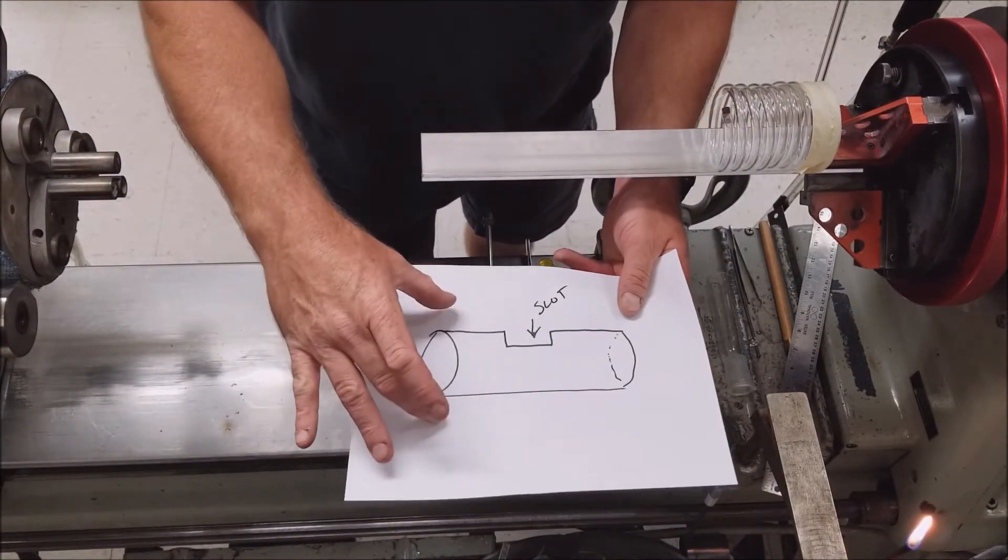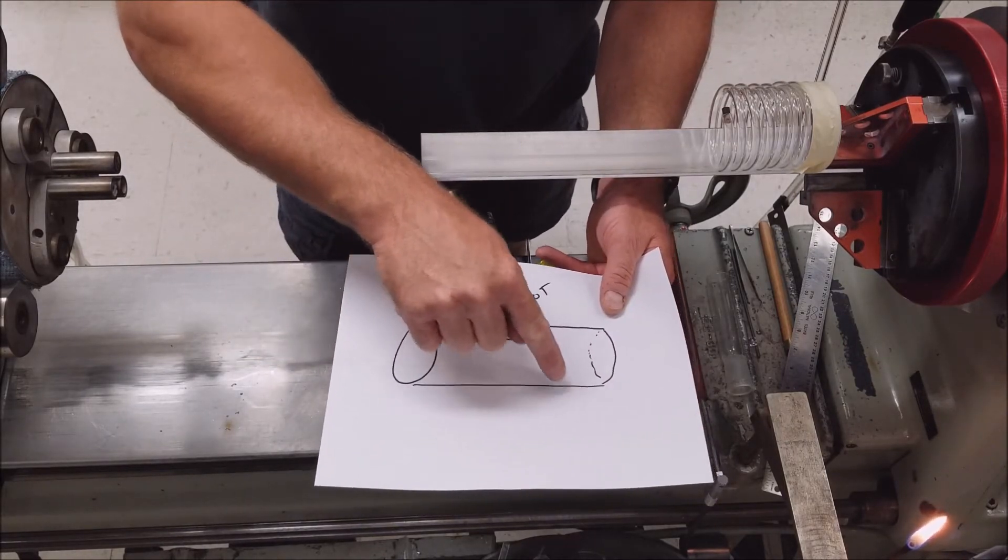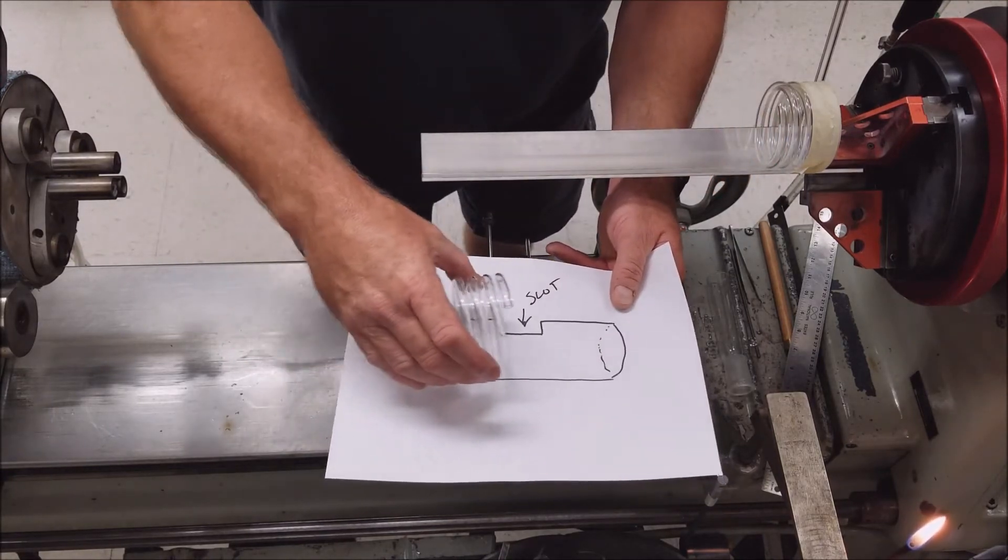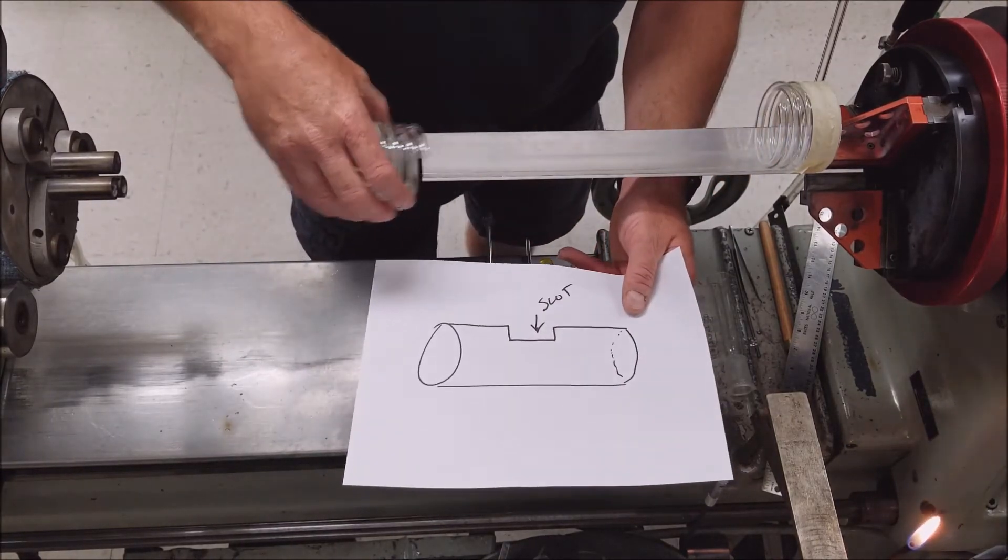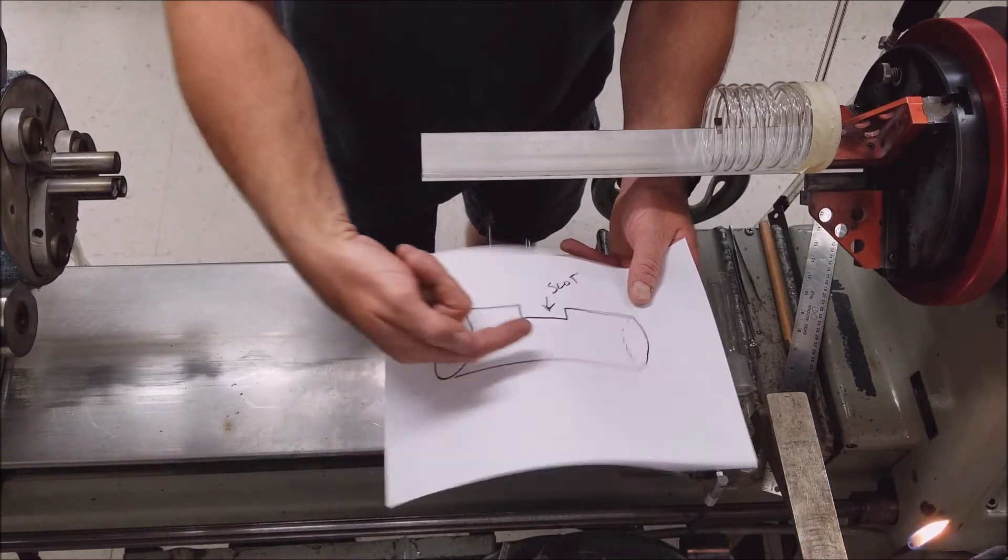Typically, you'll have a mandrel the same size as the one I just showed you, and it'll have a slot cut into it towards the end. You'll slide one set of coils over one side and one over the other, and then you'll put the splice right above the slots and stick your torch in there to do it.